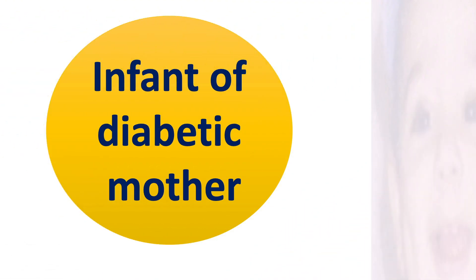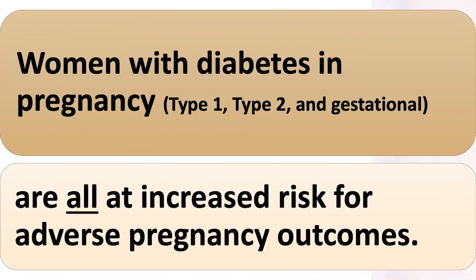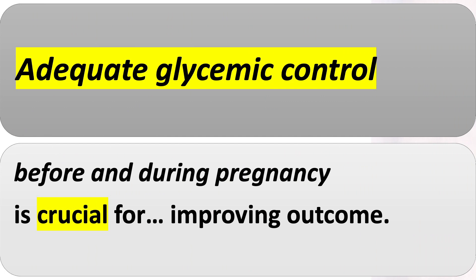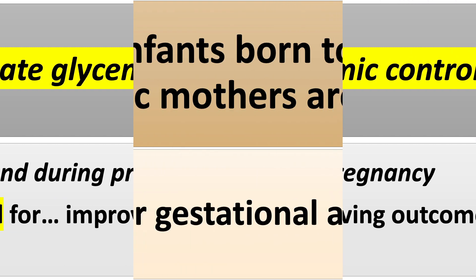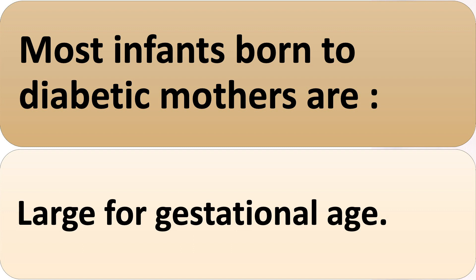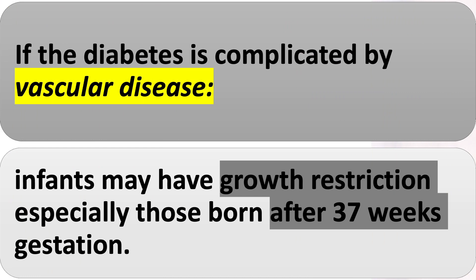Infant of diabetic mother. Women with diabetes in pregnancy — type 1, type 2, and gestational — are all at increased risk for adverse pregnancy outcomes. Adequate glycemic control before and during pregnancy is crucial for improving outcomes. Most infants born to diabetic mothers are large for gestational age. If the diabetes is complicated by vascular disease, infants may have growth restriction, especially those born after 37 weeks gestation.